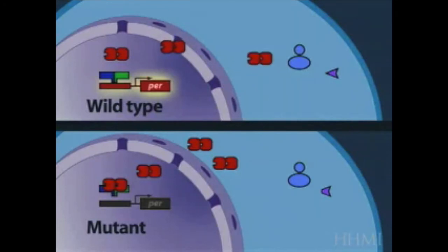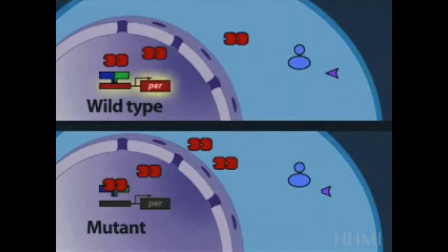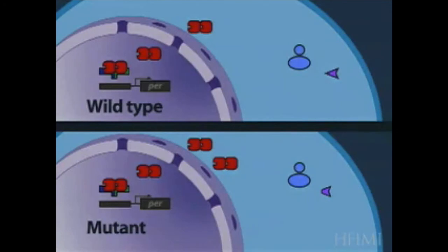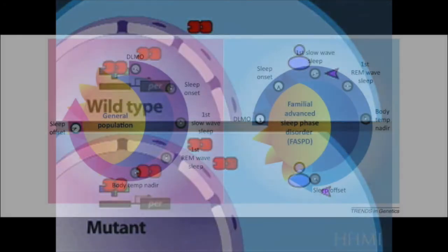This means that the negative feedback loop occurs faster in the mutant than in the wild type hamster. Specifically, hamsters homozygous for the tau mutation — where they have two copies of the mutated gene — have a shortened circadian period. Instead of following a 24-hour clock, these hamsters operate on a 20-hour clock. A small change to the casein kinase 1 epsilon protein causes it to become much less effective in phosphorylating PER proteins.